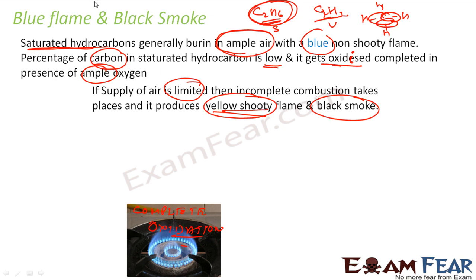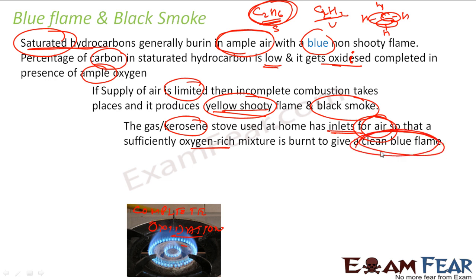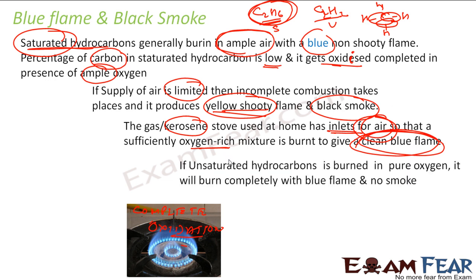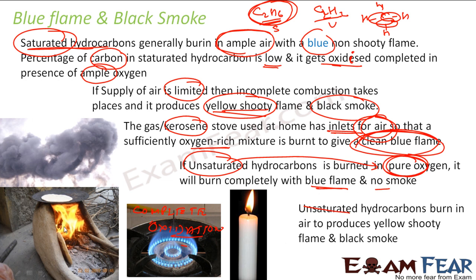If yellow flame and black smoke occur with a saturated hydrocarbon, the air supply is not proper. Gas stoves and kerosene burners have an inlet for air to ensure enough air for the saturated hydrocarbon to burn and get a clean blue flame — otherwise utensils get a black coating. For unsaturated hydrocarbons, you need to supply pure oxygen to burn with a blue flame. In normal air, unsaturated compounds like wood give a yellow flame and smoke. A candle flame is also yellow because candle wax is unsaturated.